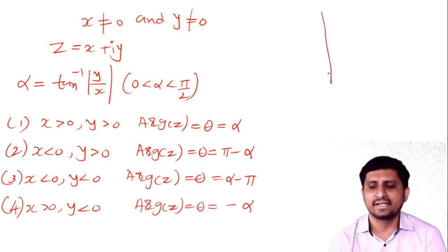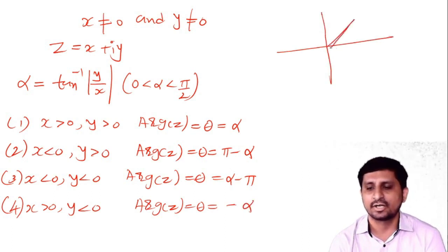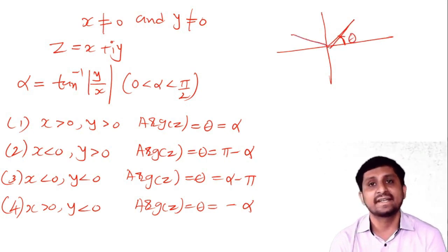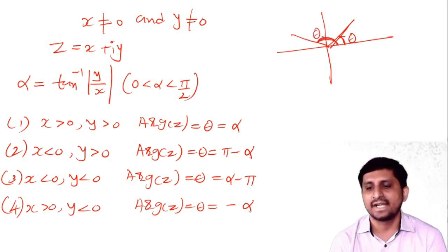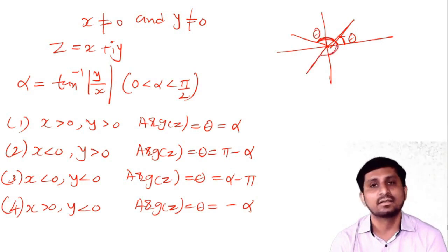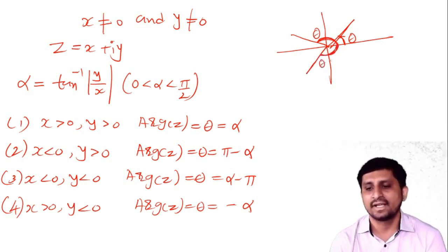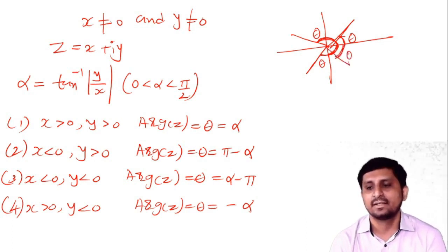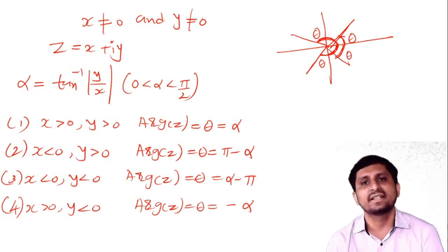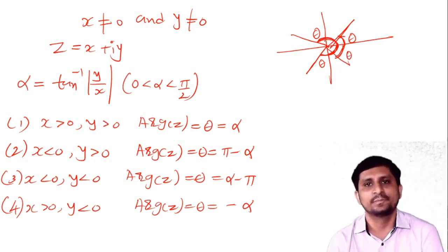Geometrically, you can understand: if the complex number is in the fourth quadrant, the angle from the positive x-axis is θ. If it is in the second quadrant, θ = π − α. If it is in the third quadrant, you take the angle α − π. These rules apply depending on which quadrant your complex number lies in.